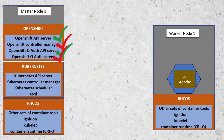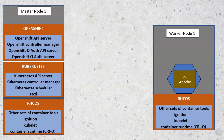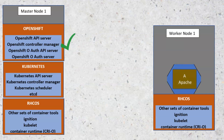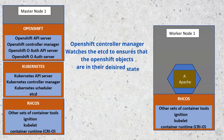For the OpenShift API server, the Kubernetes API server proxies requests to the OpenShift API server. It validates and configures data for OpenShift resources such as templates, projects, routes, and so on. For the OpenShift controller manager, this service is responsible for making sure that the OpenShift cluster objects are in their desired state. It watches etcd for changes in OpenShift objects and then uses the API to enforce the specified state.